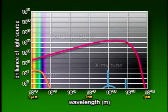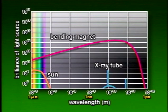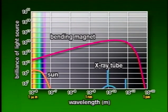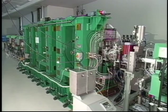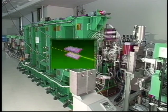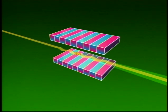Now let's compare synchrotron radiation produced at Spring-8 with other light beams. Due to its emission in the same direction from small size electron beams, synchrotron radiation in the X-ray region has brightness far greater than sunlight in the visible region. Furthermore, forcing the electron orbit to wiggle using a periodic magnetic field produced by an array of magnets called an undulator, even brighter X-ray beams can be obtained.